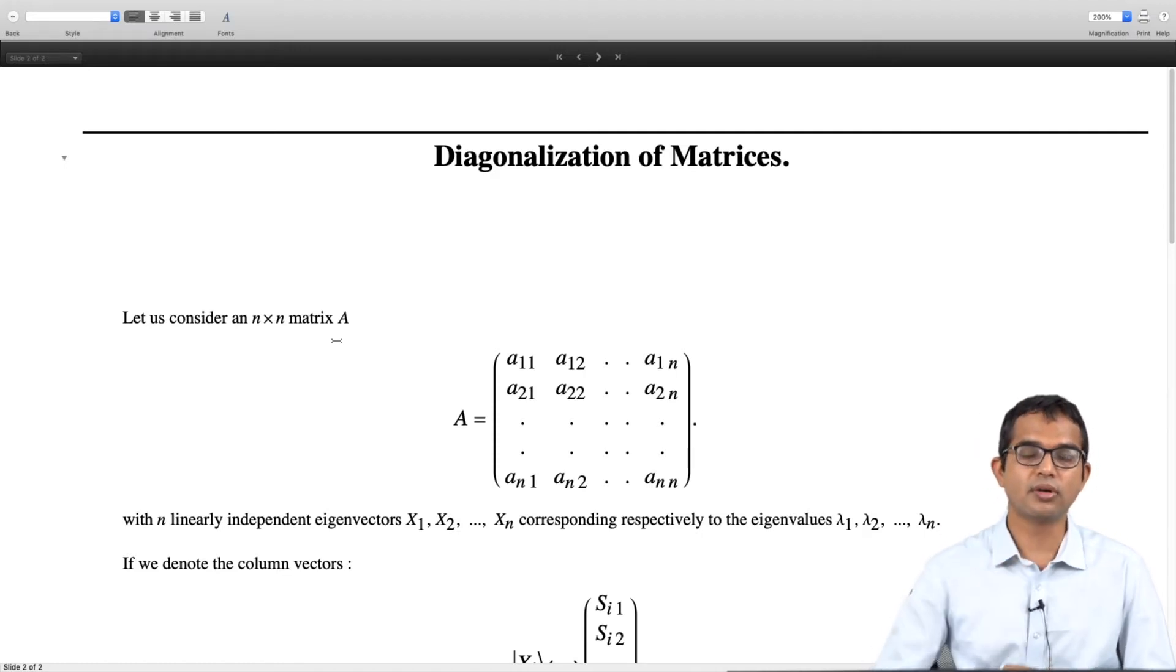If you recall from several lectures ago, we looked at certain matrices which we called defective matrices. Although every matrix is guaranteed to have exactly the number of eigenvalues as its dimension, and although some of these eigenvalues may be repeated, there is no guarantee that every matrix will have eigenvectors which will complete the space. There are matrices which are called defective matrices, but we will talk about this a little bit later.